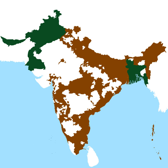The 3rd of June Plan was also known as the Mountbatten Plan. The British government proposed a plan announced on 3 June 1947 that included these principles: the principle of the partition of British India was accepted by the British government, and successor governments would be given dominion status.